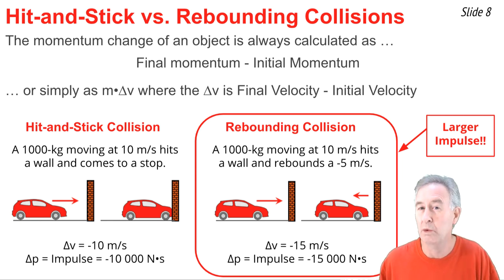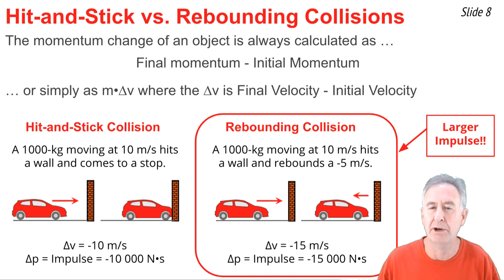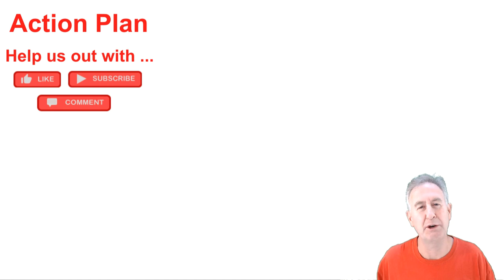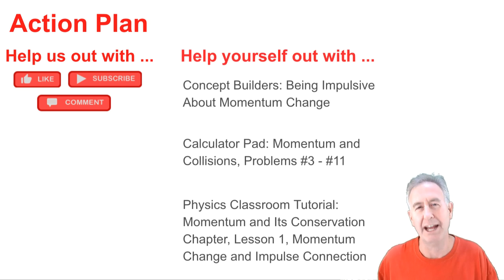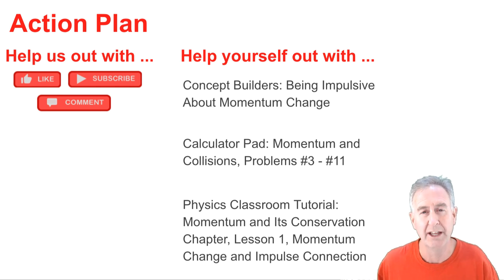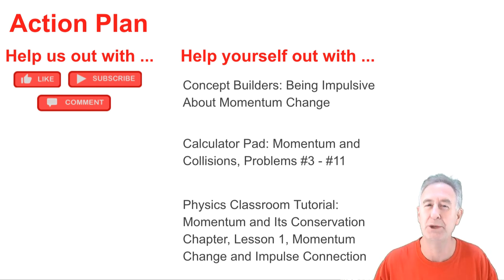This explains why we design cars to crumple in front-end collisions: it results in a smaller impulse and less damage to the passenger. Thanks for sticking with me till the end of the video. If you liked it or found it helpful, give us a like or subscribe to the channel. Here's an action plan for next steps: you'll find a concept builder, a set of calculator pad problems, and a tutorial section on our website that dovetail nicely with this video. Links are in the description. I'm Mr. H — thanks for watching.